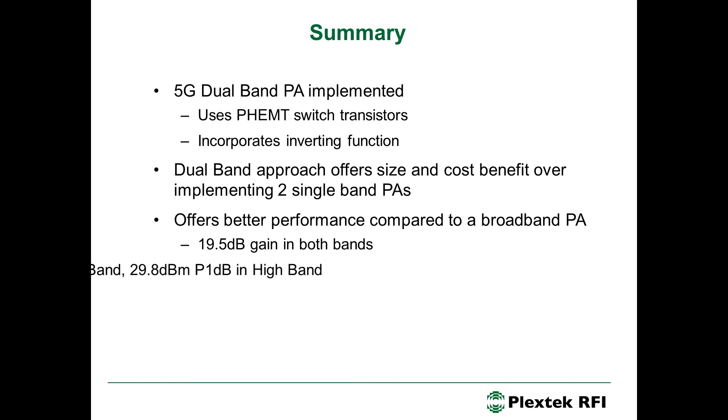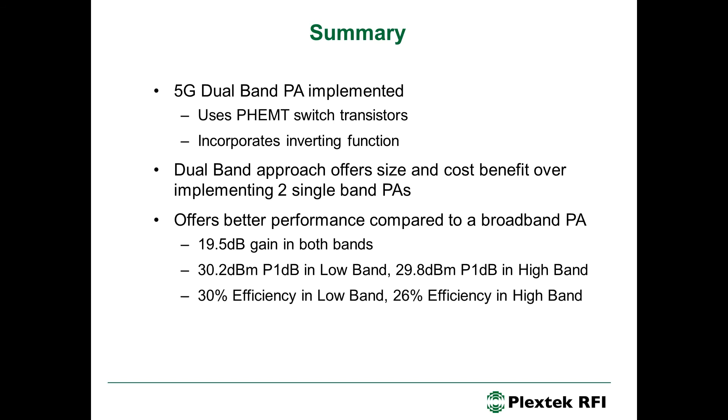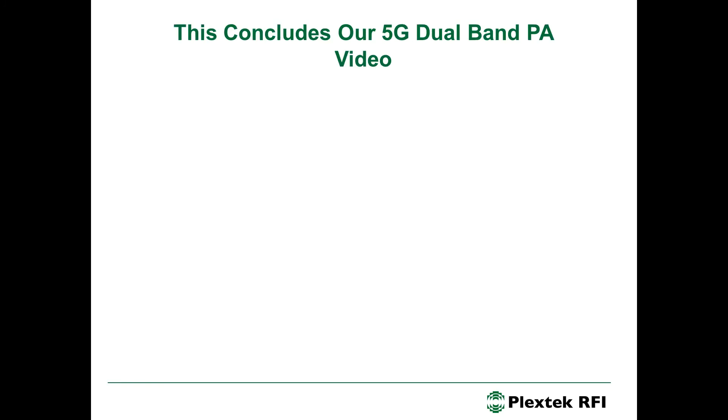To summarize the performance we got, 19.5 dB gain in both bands, 30.2 dBm P1 dB in low band and around 29.8 dBm P1 dB in high band. The efficiency in low band was about 30% at P1 dB. And in high band, the P1 dB efficiency was about 26%. So, this concludes our 5G dual band power amplifier. Thanks for listening. And please visit our website. Thank you.